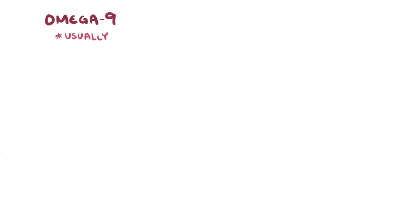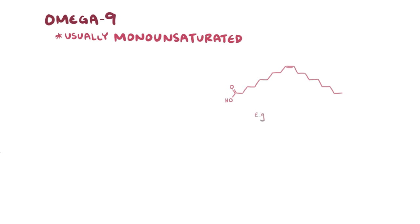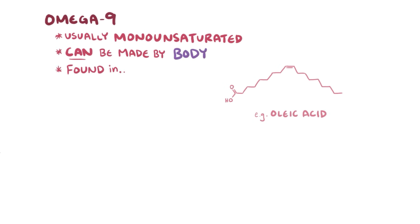Omega-9 fatty acids are typically monounsaturated fatty acids, and an example would be oleic acid. These can be made by the human body. Foods like canola and olive oil, as well as almonds, contain omega-9s.